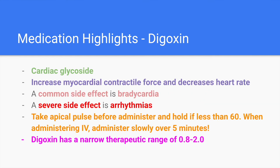Digoxin is a cardiac glycoside that increases the myocardial contractile force and decreases heart rate. A common side effect is bradycardia, and a severe side effect is arrhythmias. Always take the apical pulse prior to administering, and hold if the pulse is less than 60. When administering IV, give very slowly over 5 minutes. For patients on this medication long-term, digoxin levels should be checked to ensure they are within the therapeutic range of 0.8 to 2.0.